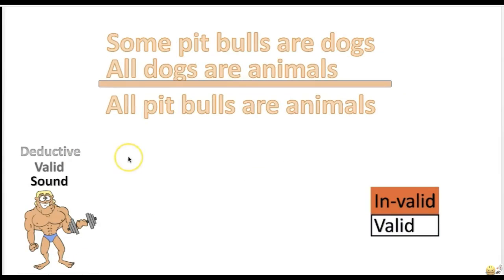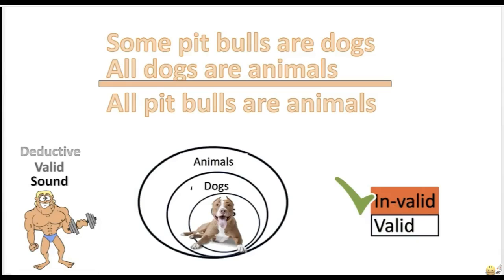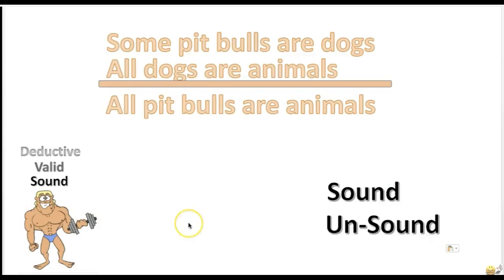Here's another practice problem: 'Some pit bulls are dogs. All dogs are animals. Therefore, all pit bulls are animals.' Is this argument valid or invalid? The answer is invalid. The conclusion that would follow validly would be that some pit bulls are animals. Is the argument sound or unsound? It's unsound — the argument is invalid, and all invalid arguments are unsound.